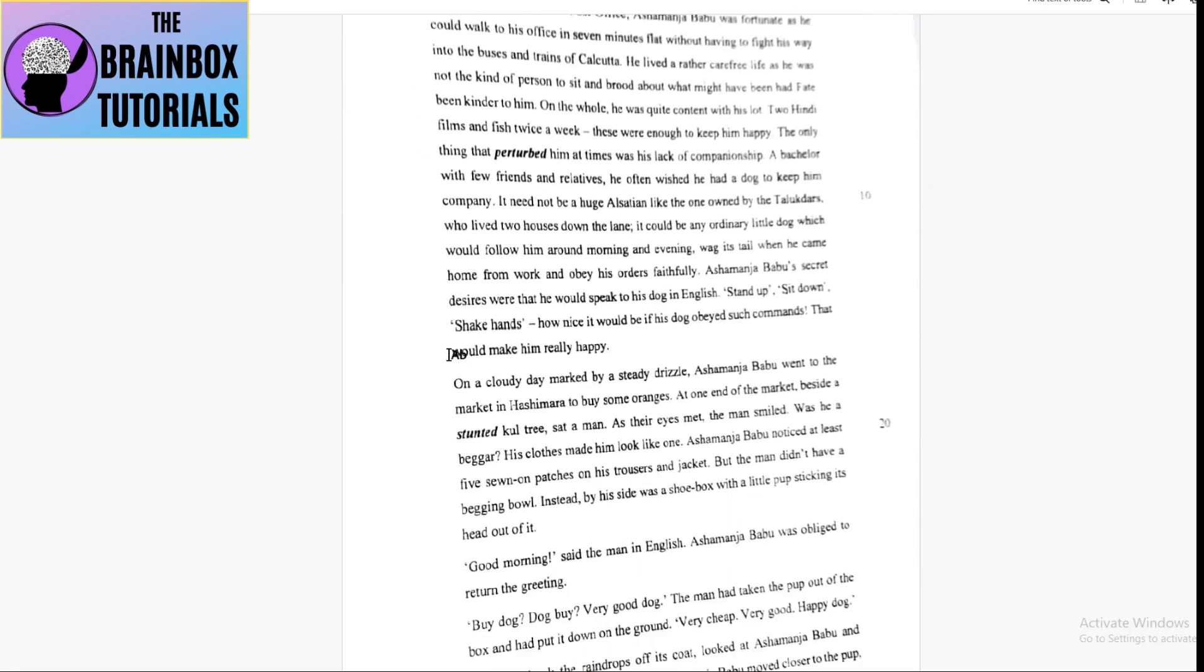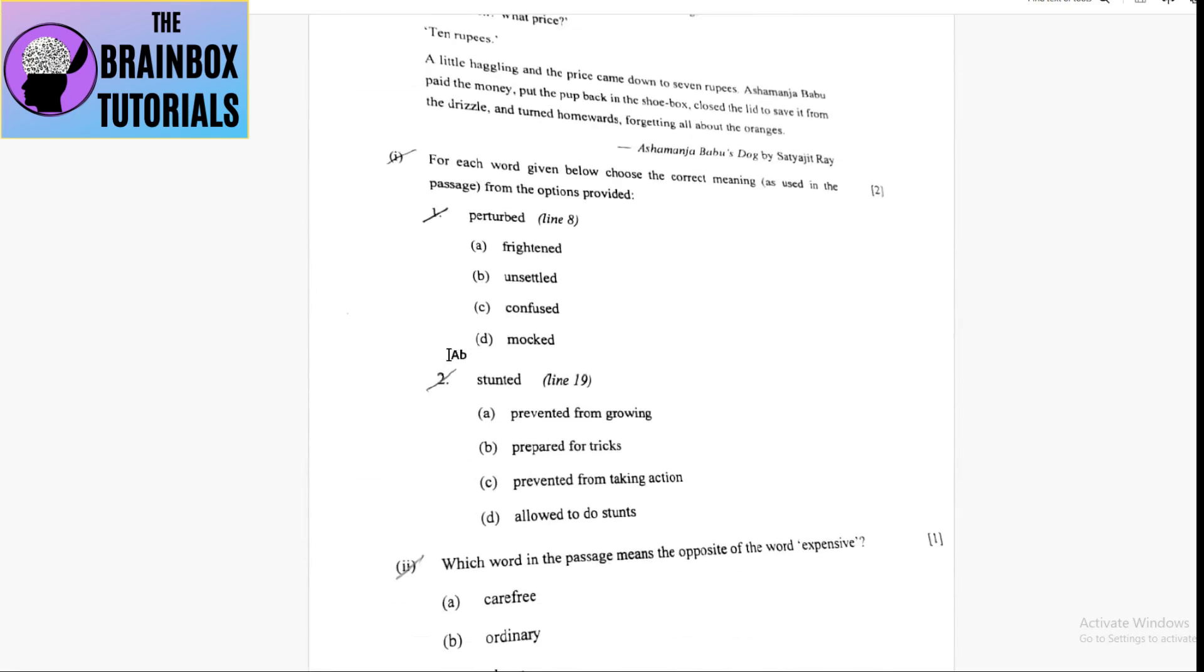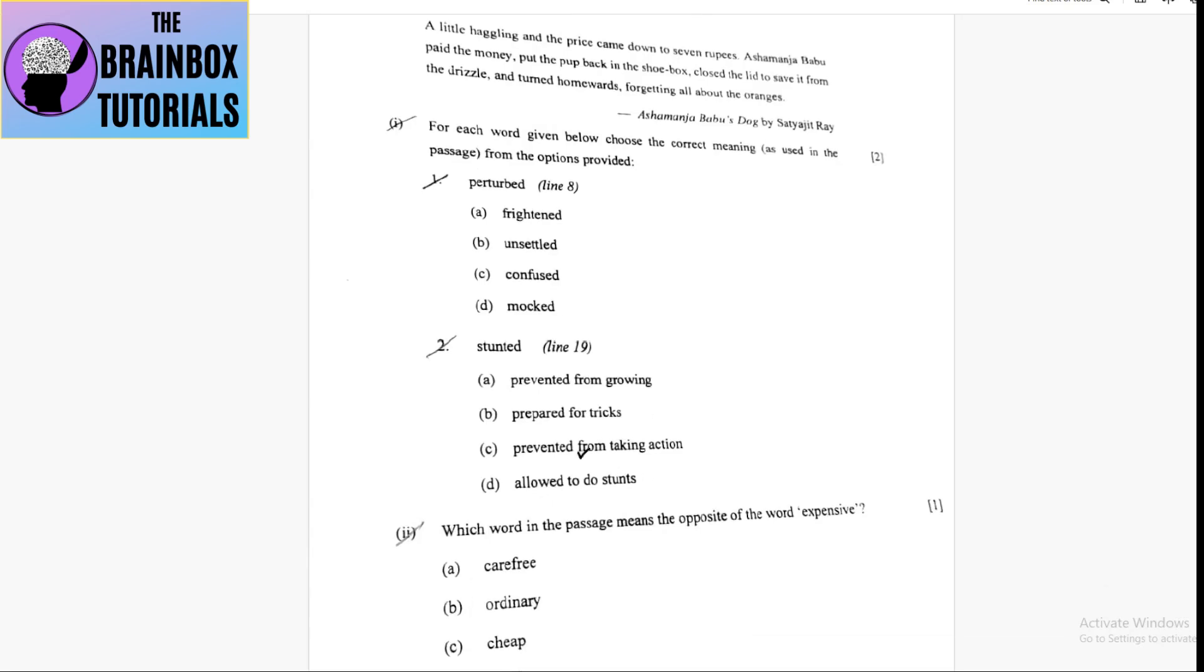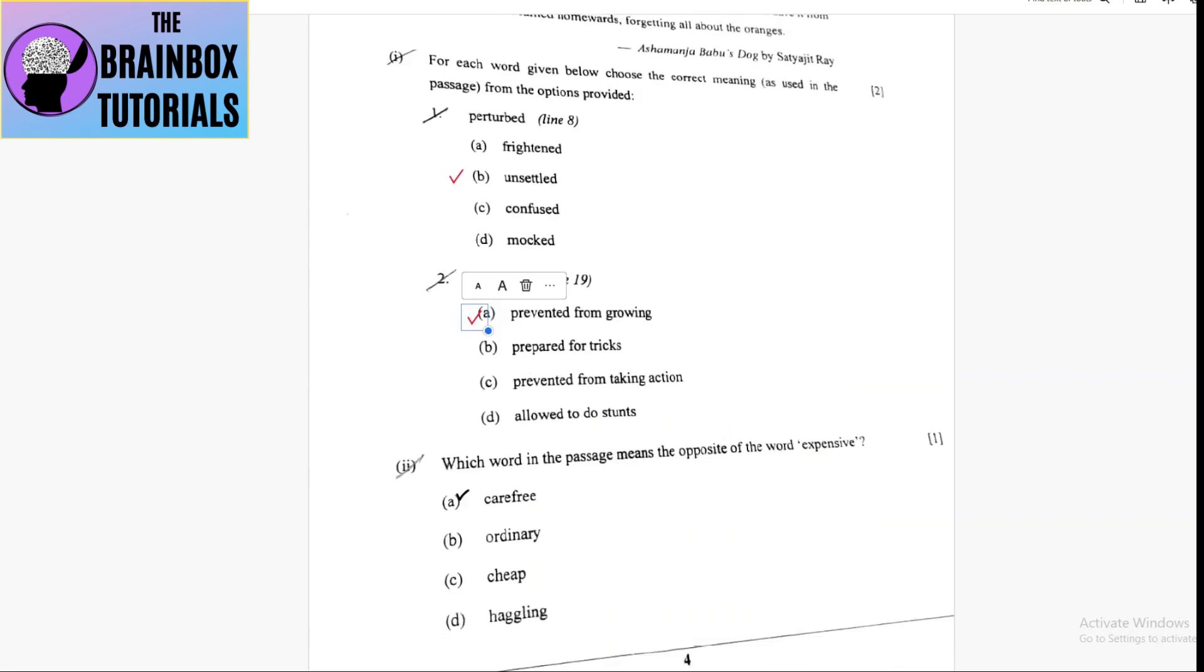Then coming to the passage part, comprehension. Let us go through the meanings first. One: perturbed, the answer would be unsettled. Second one is stunted, the answer would be prevented from growing.